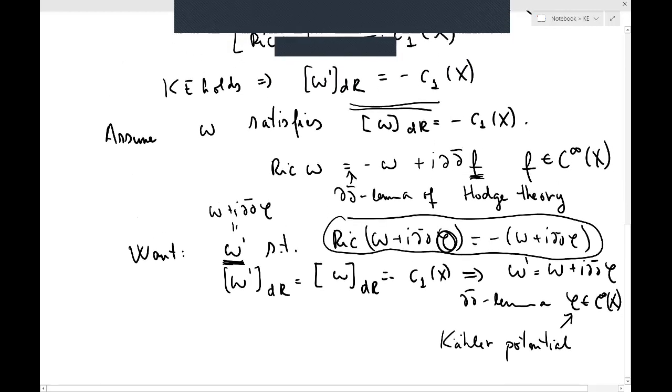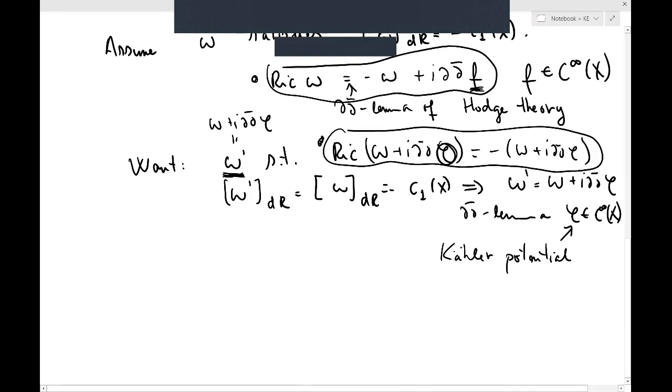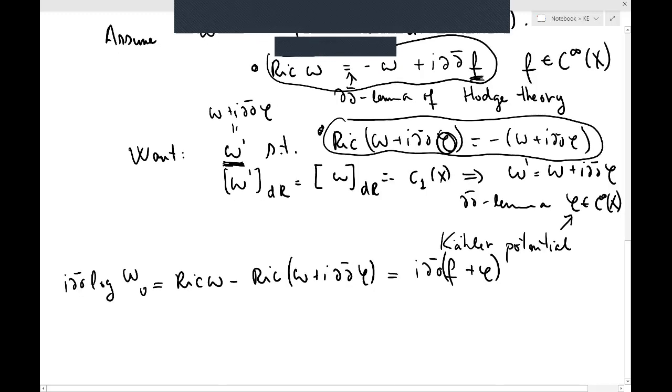So now, let me subtract this equation from this equation. So then you will get, on the left, Ricci omega minus Ricci of omega plus i∂∂̄φ. On this side, we can use the discrepancy formula I just told you about.